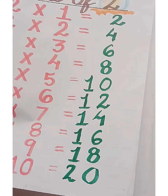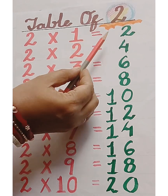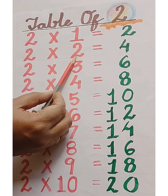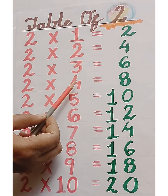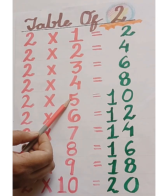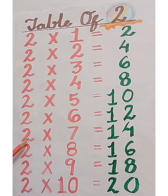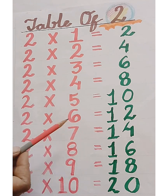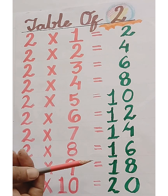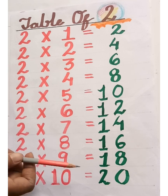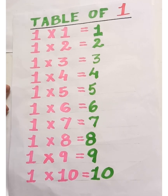Let's revise the table of two. Two ones are two, two twos are four, two threes are six, two fours are eight, two fives are ten, two sixes are twelve, two sevens are fourteen, two eights are sixteen.